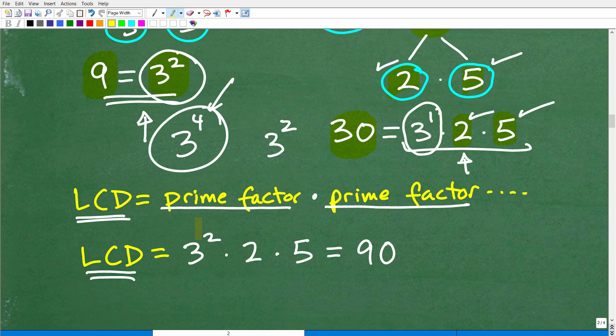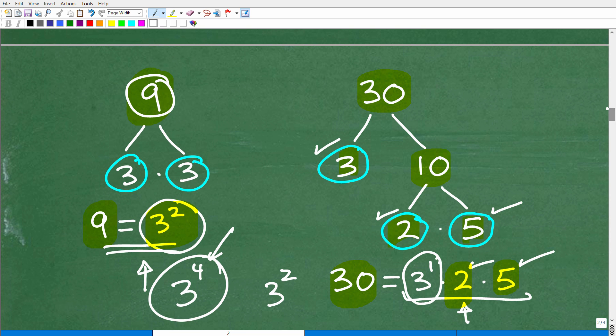So here I have 3 squared. I need a 2 and I need a 5. Now I'm going to multiply all these together. We can see 3 squared is 9. 2 times 5 is 10. So 9 times 10 is 90. That is the LCD. That's the lowest number that both 9 and 30 can go into.